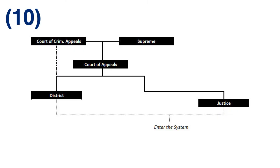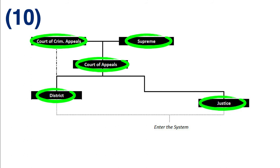According to CCP 18.01(i), in a county that does not have a judge of a municipal court of record with a courtroom located in that county, or does not have a county court judge who is an attorney licensed by the state of Texas, or does not have a county court at law judge who is an attorney licensed by the state of Texas, any magistrate may issue a search warrant under CCP 18.02(a)(10) or CCP 18.02(a)(12). However, these exceptions do not apply to a subsequent search warrant under CCP 18.02(a)(10) for mere evidence.